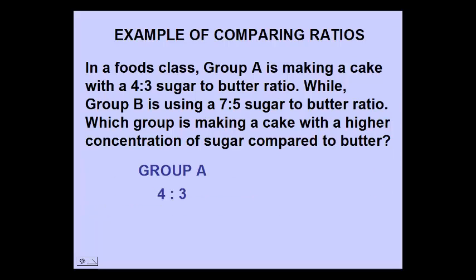We'll start with group A. What do we need to do with the amount of butter, the 3, to make it equal to 1? In this case, we're going to divide by 3. And to make an equivalent ratio, we also need to divide the left side of the ratio by 3 as well. This will give us a decimal answer of 1.3 repeating compared to 1.